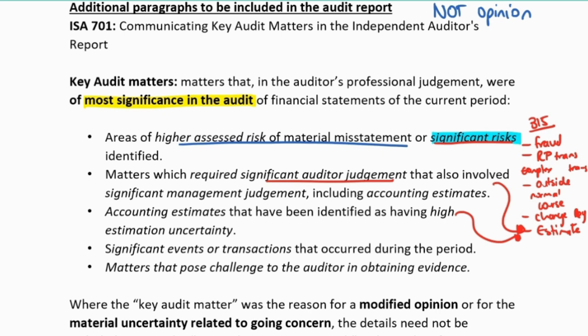And where there was uncertainty in an estimate - that makes sense because that's a significant risk. Or significant events or transactions that occurred during the audit - that makes sense because complex transactions would be considered having a significant risk. And anything where it was a significant risk and where it was a challenge for us to get evidence, so potentially limitations of scope, or it looked like it was going to be a limitation of scope but eventually we were able to get it. These are all things we would include in the key audit matters paragraph.